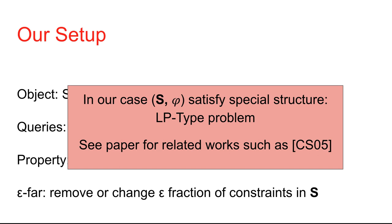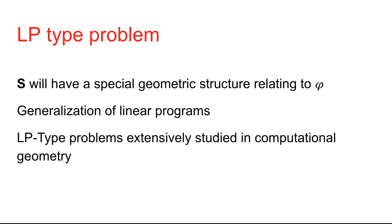As a historical note, there have been related papers that study similar notions — I would point to our paper for a list of references, for instance the paper by Shumai and Scholler. As intuition, in LP-type problems the constraints S have a special geometric structure that relates to the objective function phi. They are a natural generalization of linear programs, even though phi doesn't have to be linear. These types of problems have been extensively studied in computational geometry.